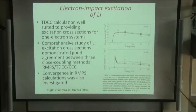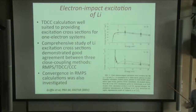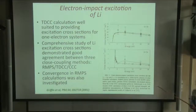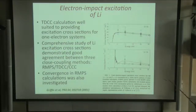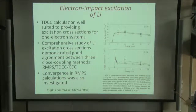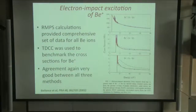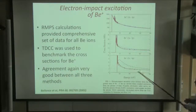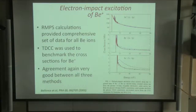Regarding electron impact excitation: the time-dependent close coupling method is only really suited to look at excitation cross-sections from one-electron systems, because of the configuration-average nature of our approach. For one-electron systems, where configuration and terms coincide, one can look at lithium and beryllium plus — and time-dependent, R-matrix, and convergent close coupling methods all agree quite well.